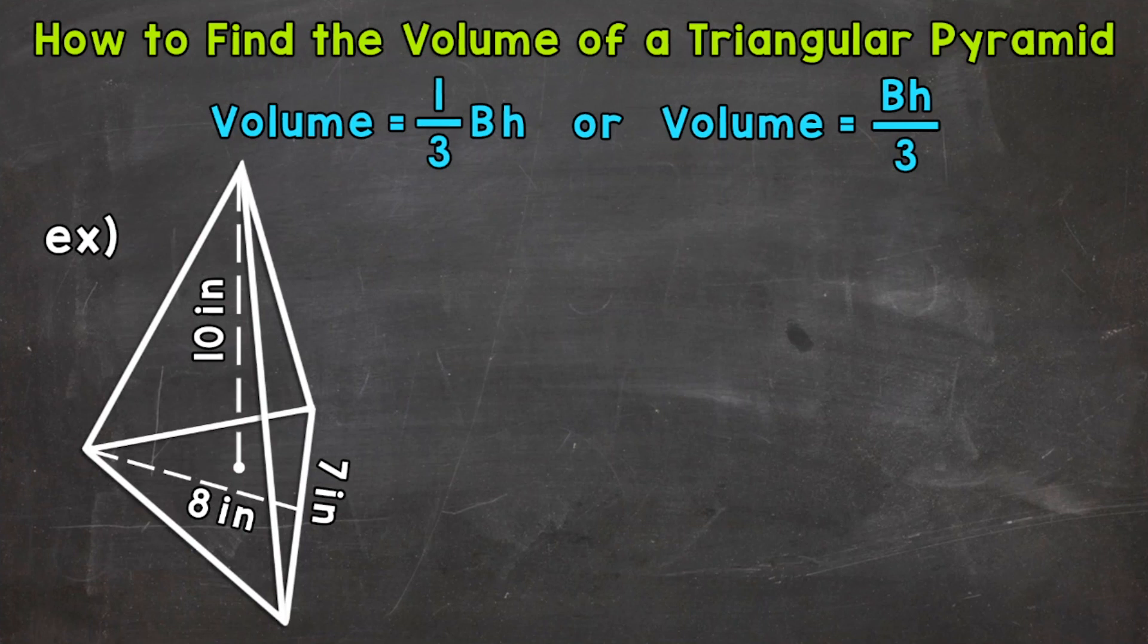I do want to mention that you can use the formula the area of the base times the height divided by 3 because multiplying by 1 third and dividing by 3 will give you the same thing. So let's jump into our example where we have a triangular pyramid with a height of 10 inches. And the first thing that we want to do is write out our formula.